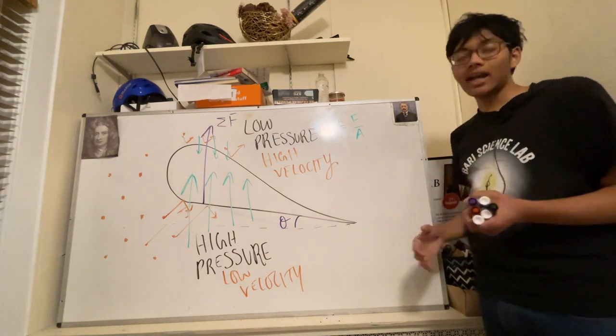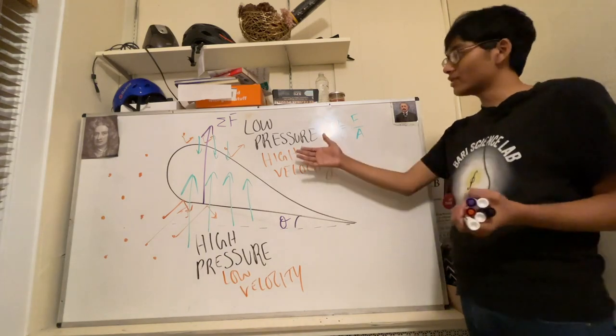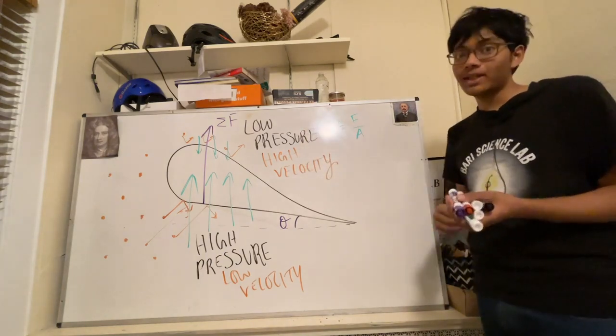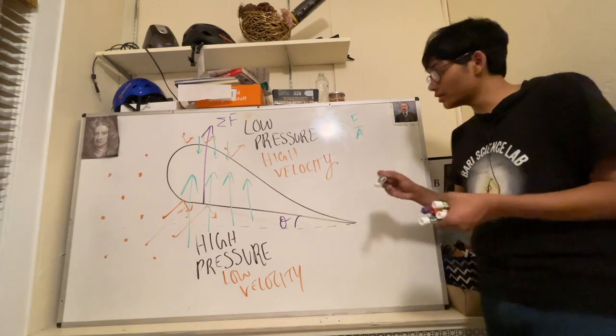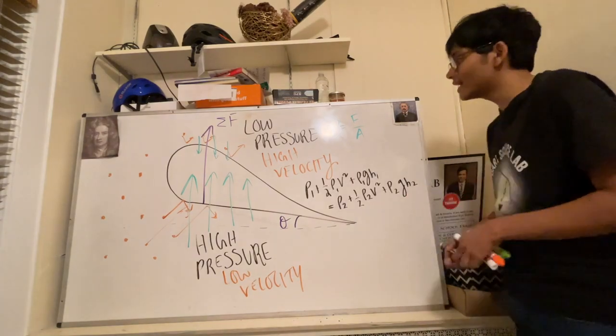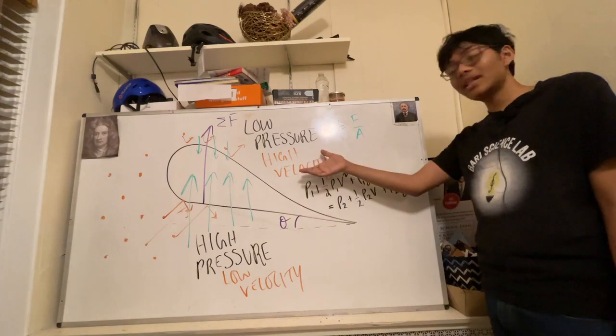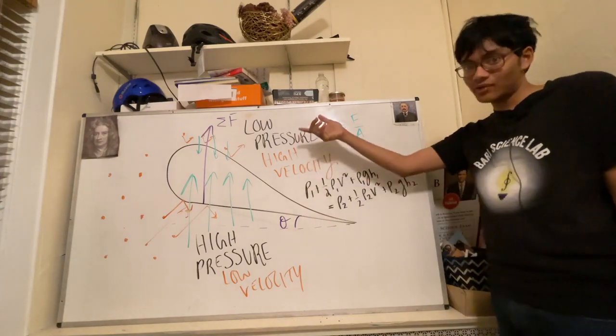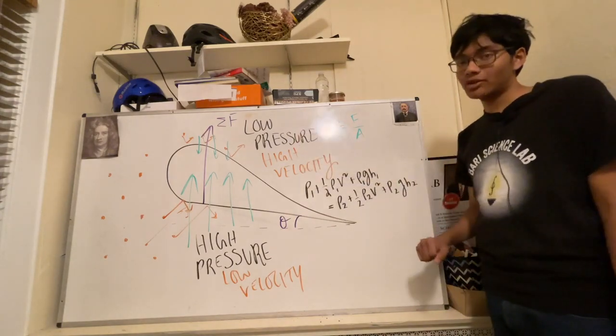Now, you might think, why is low pressure due to a high velocity? Shouldn't a high velocity be due to a high pressure? But be careful. Bernoulli's principle basically says, due to conservation of energy, if you have an increase in velocity, you need to have a decrease in pressure, even though that might be counterintuitive.